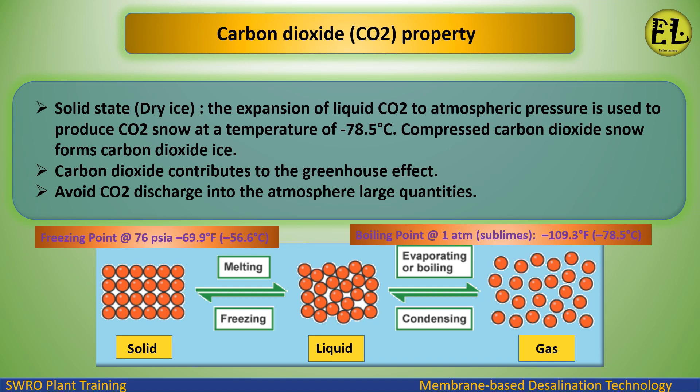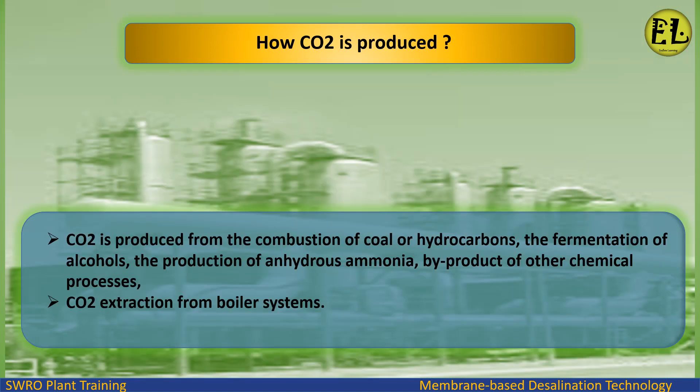Compressed carbon dioxide snow forms carbon dioxide ice. Carbon dioxide contributes to the greenhouse effect; avoid discharging large quantities into the atmosphere. CO2 is produced from the combustion of coal or hydrocarbons, the fermentation of alcohols, and the production of anhydrous ammonia, as well as being a byproduct of other chemical processes.